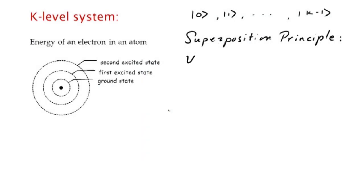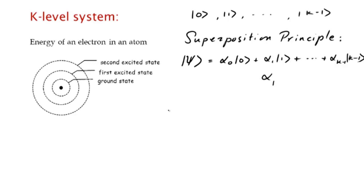The superposition principle, which is one of the basic axioms of quantum mechanics, says that in general the state of the system is any linear superposition of these allowable states — 0 through k minus 1 — each with its amplitude alpha sub j, which is a complex number. These amplitudes are normalized so that the sum of the magnitude squared of alpha j equals 1, for j equal to 0 to k minus 1.